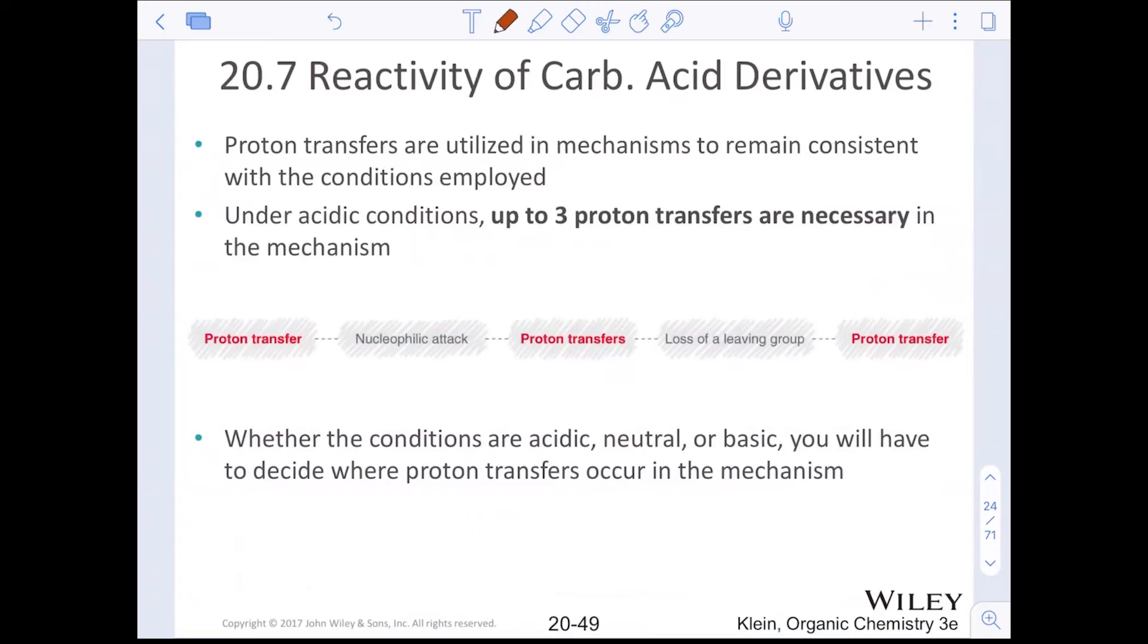Proton transfers can occur in these reactions, primarily when we talk about the less reactive carboxylic acid derivatives. We'll start with basic conditions, but once we start moving into the esters and amides, we'll see that proton transfers might be peppered in. Up to three proton transfers may be necessary in our mechanism. Whether the conditions are acidic, neutral, or basic, you will have to decide whether the proton transfer happens first or not.